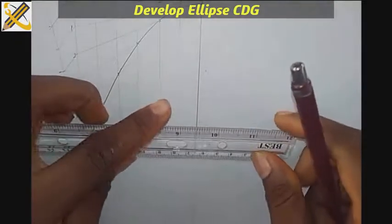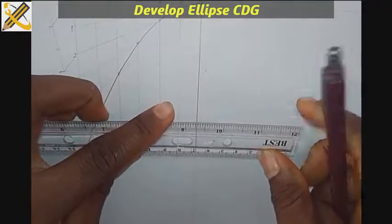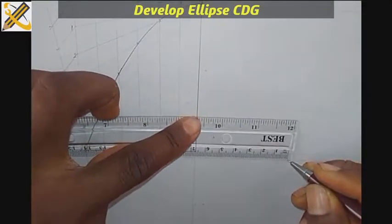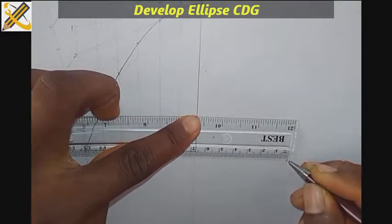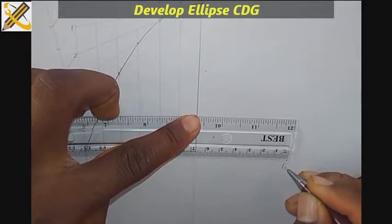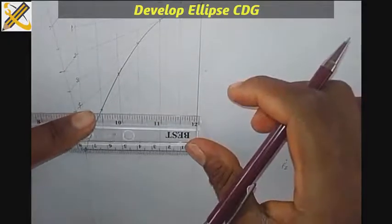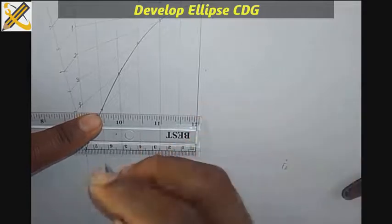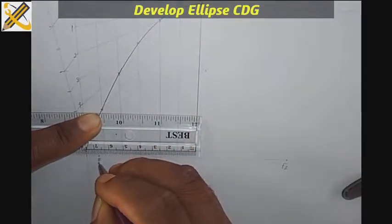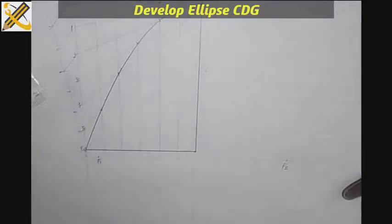So I'm going to measure 67 towards the left and right hand side. This is my F2, this is my F1. So using focal point method to develop an ellipse, take note of this.